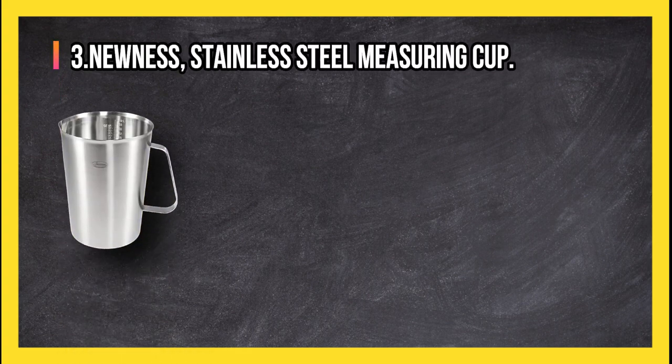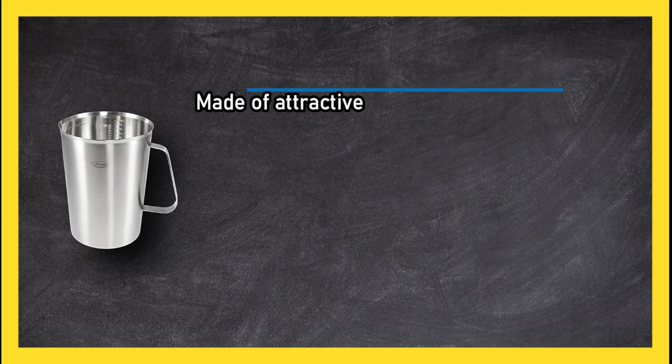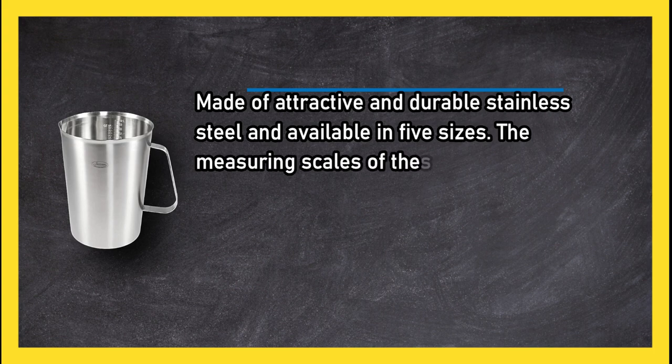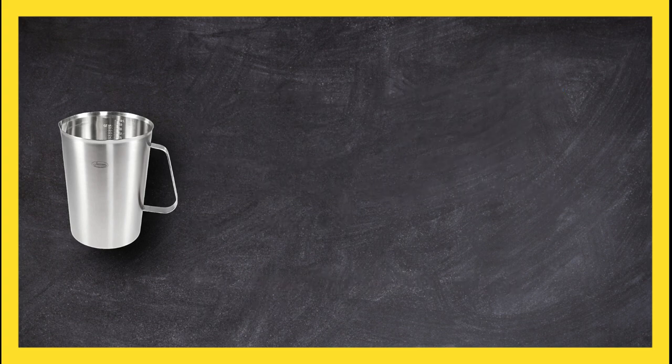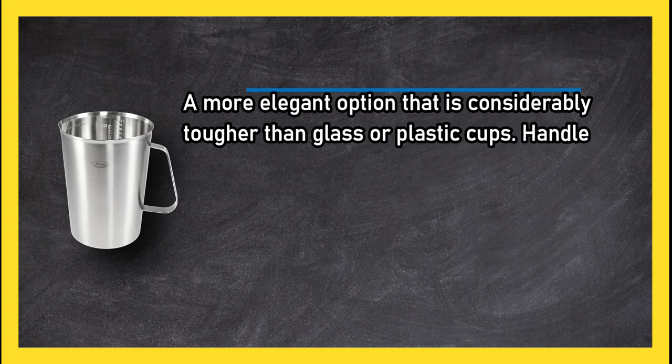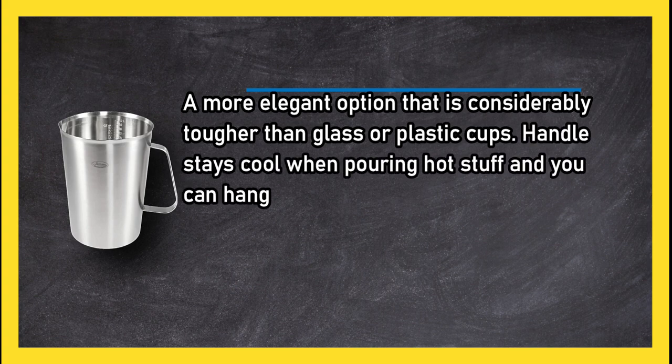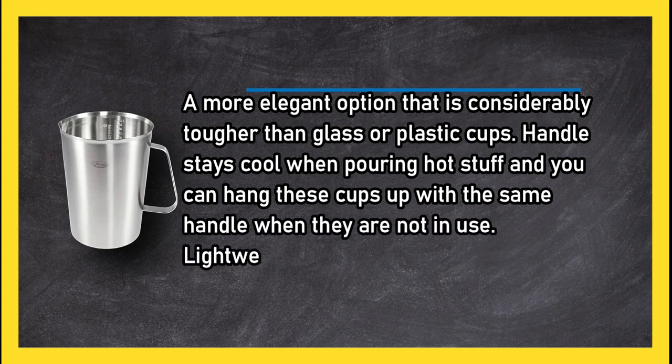At number three, Newness stainless steel measuring cup. Made of attractive and durable stainless steel and available in five sizes, the measurement scales of these cups are embossed on the inside and are easy to read. Measurements show liters, ounces, and cups. A more elegant option that is considerably tougher than glass or plastic cups. Handle stays cool when pouring hot stuff and you can hang these cups up with the same handle when not in use. Lightweight yet sturdy, a stylish option that is built to last. Some quality control issues.